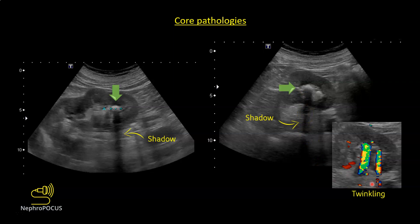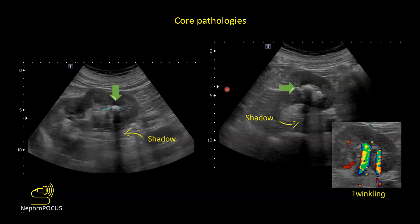On color Doppler, stones typically give an artifact called the twinkle artifact — the color Doppler mistakes a stone for turbulent flow, producing a mixture of colors wherever there are stones. Here you have one stone with shadowing, and another stone with shadowing, and on color Doppler you can see the mixture of colors following these two stones. The rougher the stone surface, the more pronounced the twinkle artifact. The twinkle artifact is better visualized if you place the focal zone at the stone or slightly below it. The focal zone is the area where the ultrasound beam is narrowest — like an hourglass sign on some machines — and here the arrow shows where the sonographer has set the focal zone at the level of the stone.